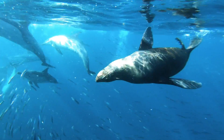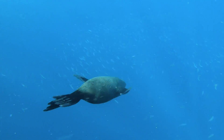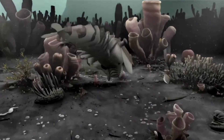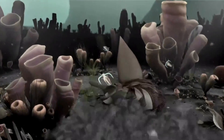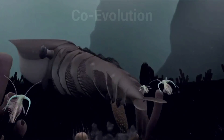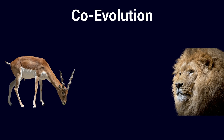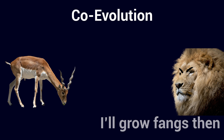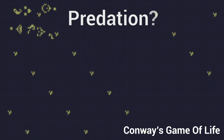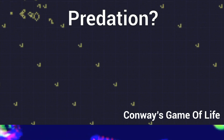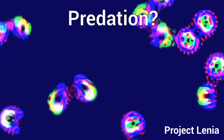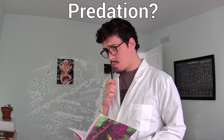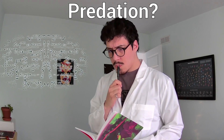Predation is one of the most significant dynamics that can be observed in an ecosystem. It's been at the root of the Cambrian explosion, one of the major diversification events in life's history. As an incredibly powerful driver of co-evolution — the process by which two or more species evolve in relation to one another — it is surprising that its development or evolution is so hard to replicate. Together I want to explore what kind of dynamics are necessary for predation to develop in an ecosystem and what can be done to encourage it.